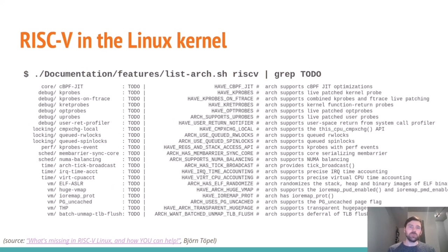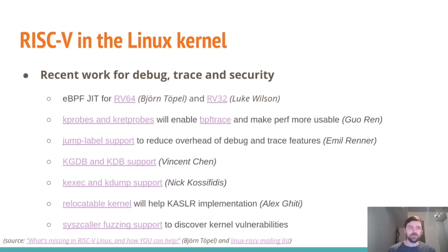There's a script in the Linux source you can run that shows all the architecture features still needing work — useful if you want to dig in and contribute. Recent work on debug, trace, and security includes the eBPF JIT for RISC-V, which is important because eBPF is bringing exciting capabilities to Linux. KProbes and KRetProbes will enable BPF tracing and make perf much more usable. KGDB and KDB support is being worked on for debugging, and KExec, KDump, relocatable kernel work will help with address space layout randomization. The Syzkaller fuzzing bot now supports RISC-V as well.